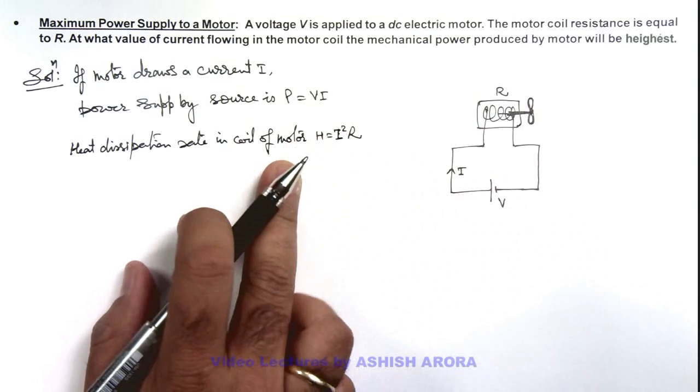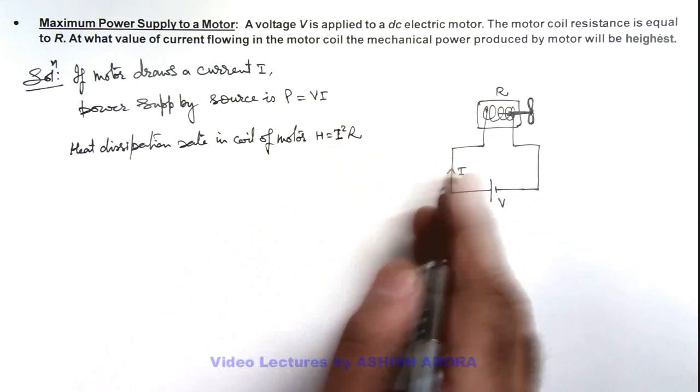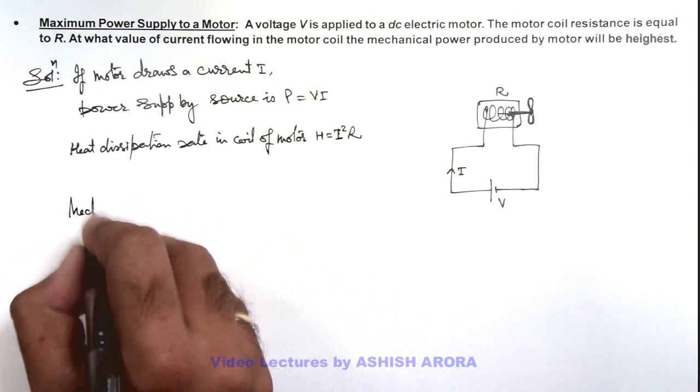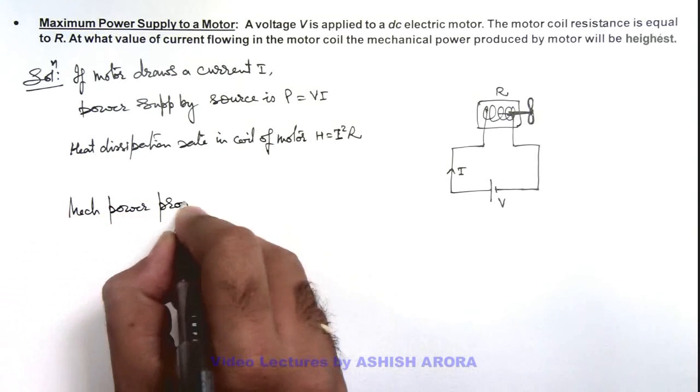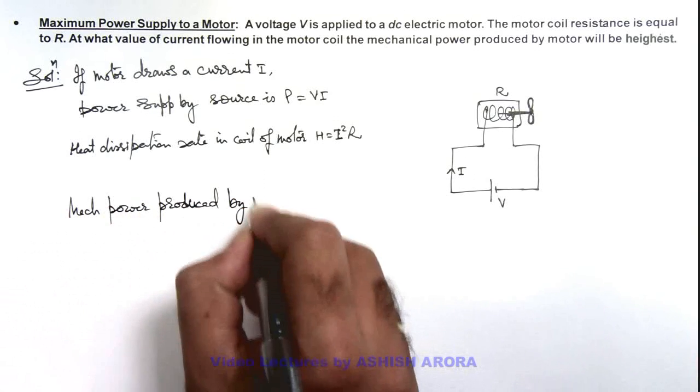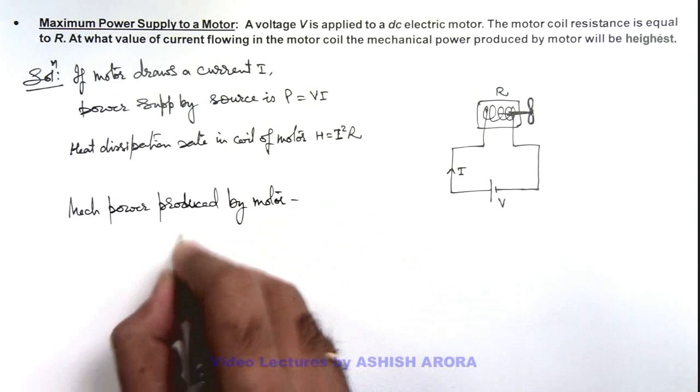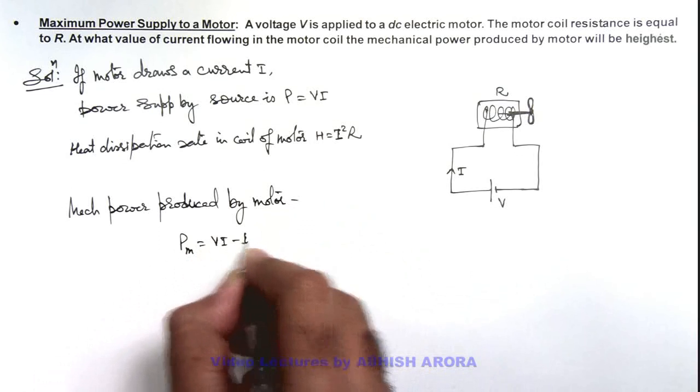Now this is the power supplied by the source, this is the heat dissipated. If we calculate the mechanical power produced by motor, this mechanical power can be written as P_m = VI - I²R.